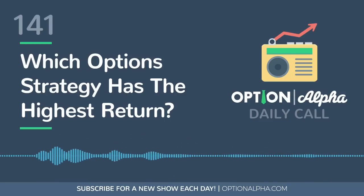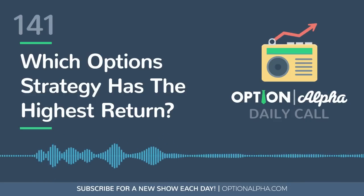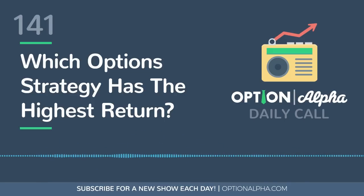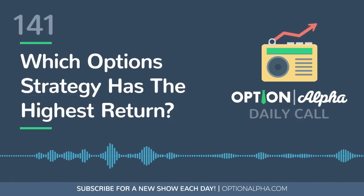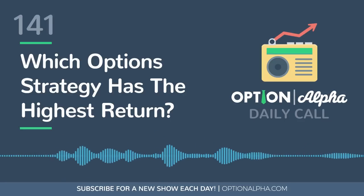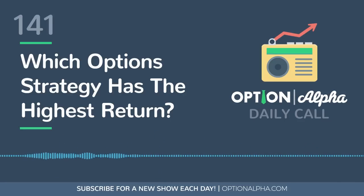You can take a look at all the different strategies that work in different market environments using our trade optimizer software at optionalpha.com/toolbox. It's a really useful tool to see what strategy works best in the current market environment, because there's no one unicorn strategy that works best in all environments. If you're 10 days from expiration versus 30 versus 60, you might have to tweak your option strategy. Until next time, happy trading.